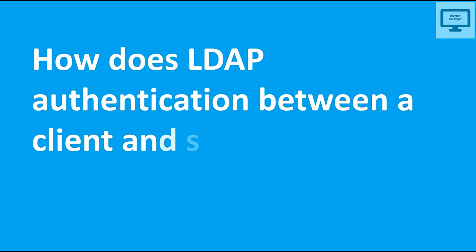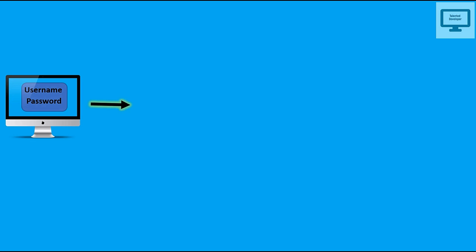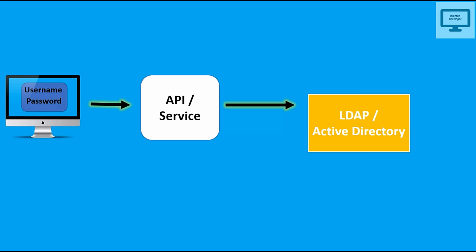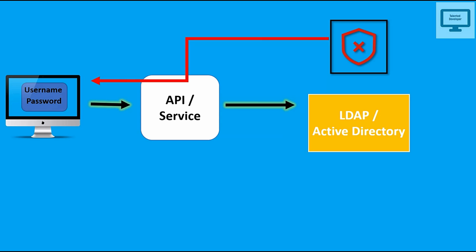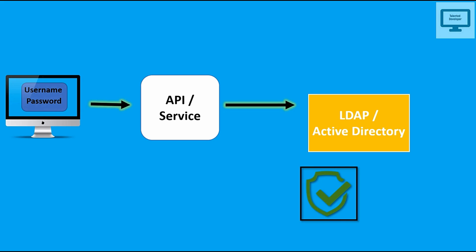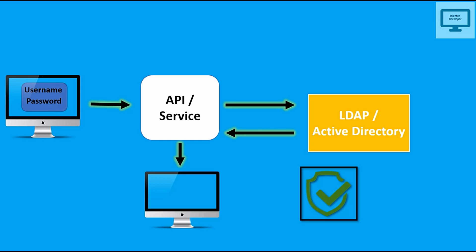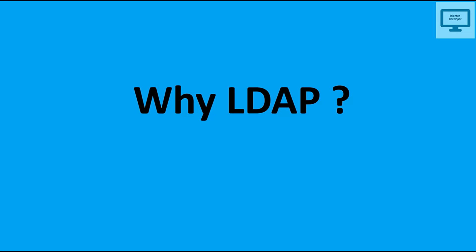So how does LDAP authentication between a client and server work? From the client side we enter the username and password, it goes to your services or API, which then calls the LDAP server. The LDAP server talks with its database. If the user is not authenticated, it sends back a response saying the user is not valid. If the credentials match, it authorizes them — you have permission to access the services.